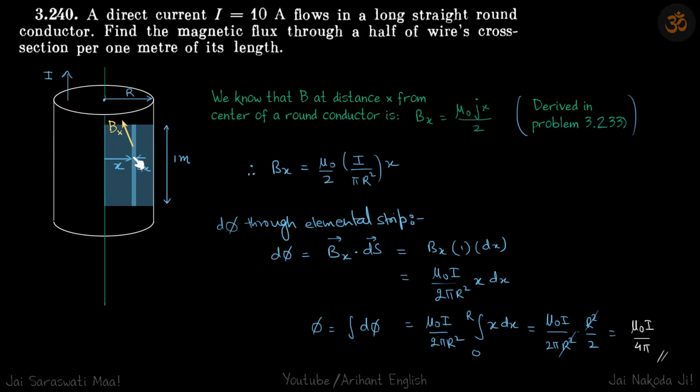B at a distance x we know and we know the element da. d phi through this elemental strip is Bx dot ds, and clearly the ds and B are perpendicular to each other. This becomes Bx into area. Area of this strip is one meter into dx.